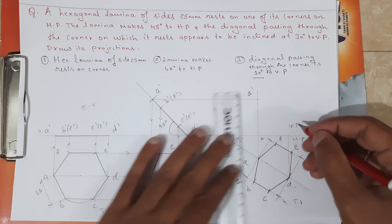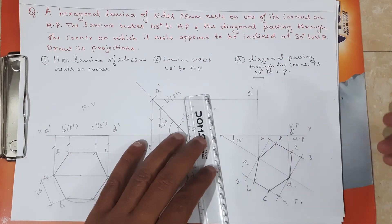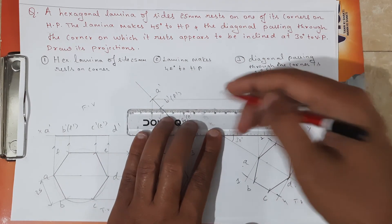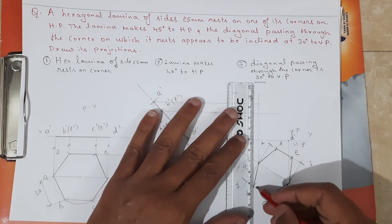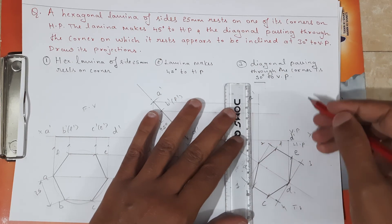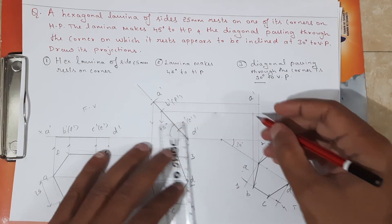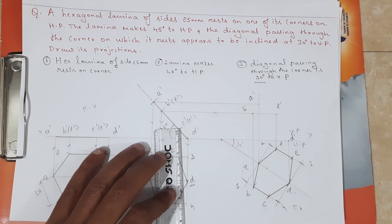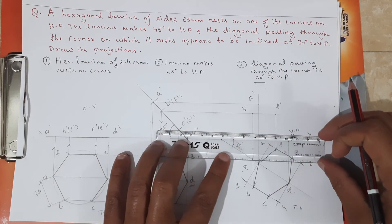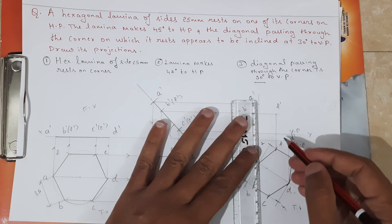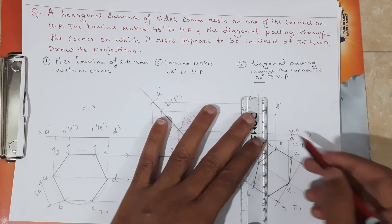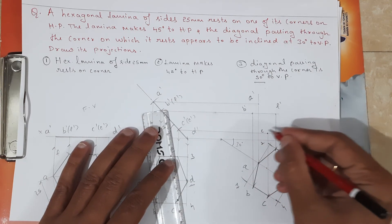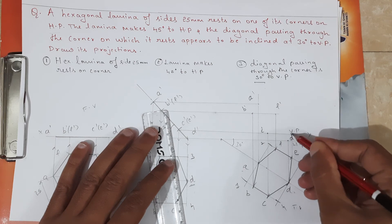Similarly, locate D-dash, B-dash, and F-dash by drawing projections. This gives B and F — so B-dash and F-dash are located. Next, draw horizontal projections from C-dash and E-dash and draw vertical projections from C and E. This gives C-dash and E-dash.